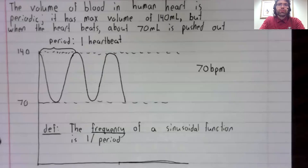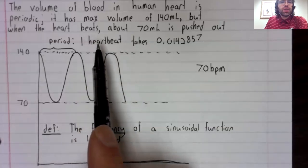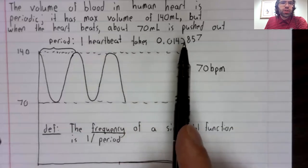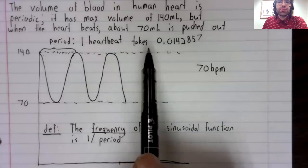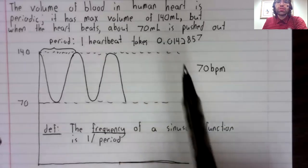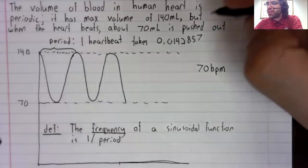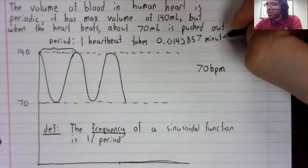The frequency of a sinusoidal function is one divided by its period. So now I've added some info up here. I've told you how long it takes my heart to beat, about 0.0142857 minutes.